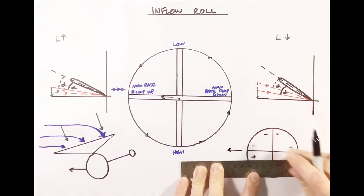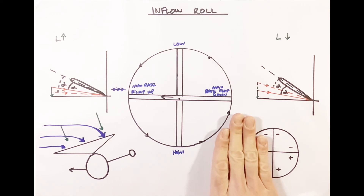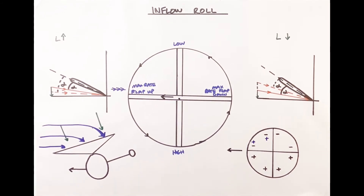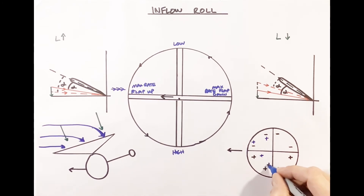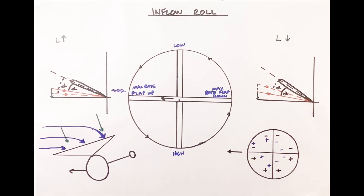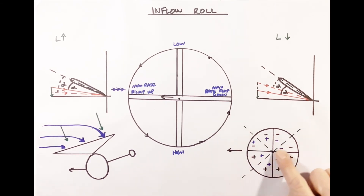Now, assuming the aircraft is moving in this direction, we can overlay flap back onto this diagram. In flap back, the blade is flapping upwards at the front due to the increased speed on the advancing side as we move the disc forward. So the disc at the front is flapped up — positive in the forward-right and forward-left quadrants — and at the rear the disc is flapped down, giving a negative in both rear quadrants. We can now draw a line of symmetry.